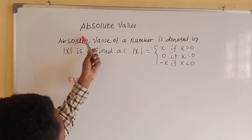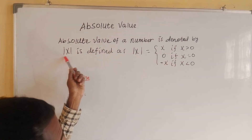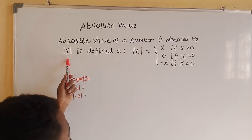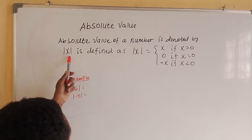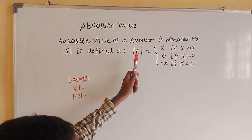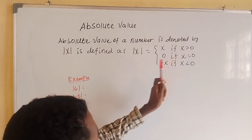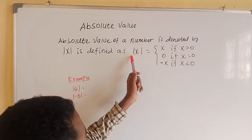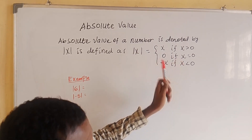The absolute value of a number is denoted by this symbol. The absolute value of x — also called the modulus of x — is defined as: absolute value of x equals x if x is greater than 0; equals 0 if x equals 0; and equals negative x if x is less than 0. This is the Absolute Value definition.